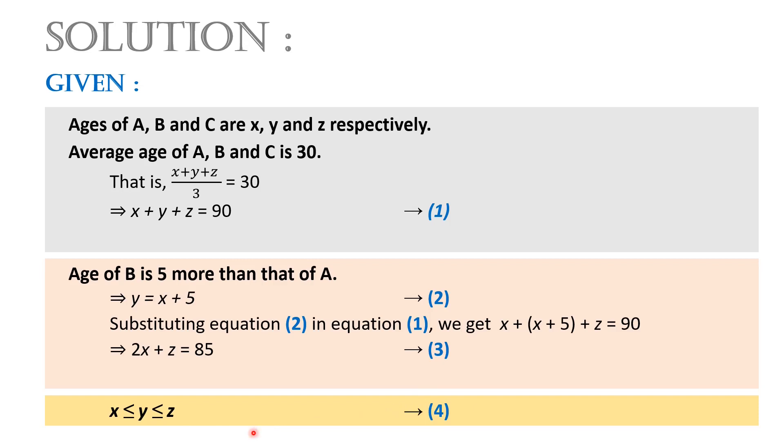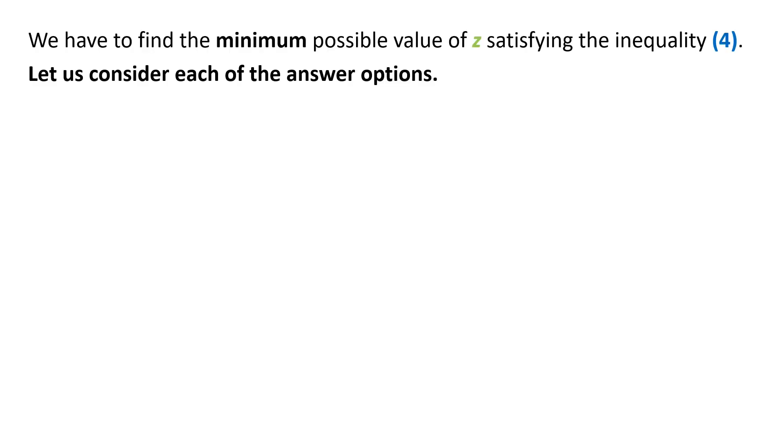It is also given that X is less than or equal to Y which is less than or equal to Z. Let this be equation 4. We have to find the minimum possible value of Z satisfying the inequality number 4. Let us consider each of the answer options.